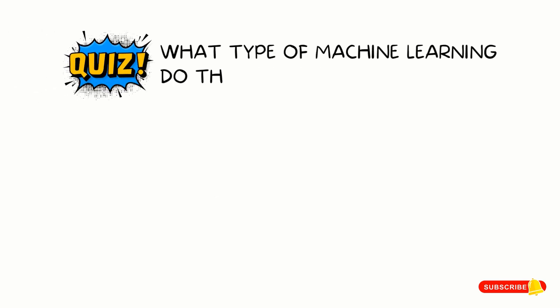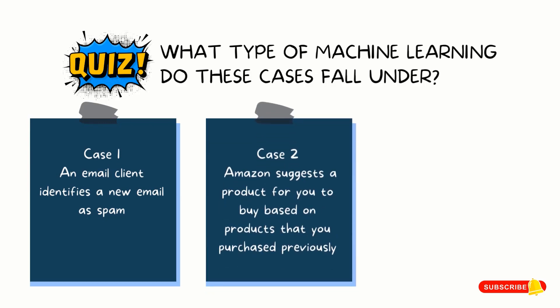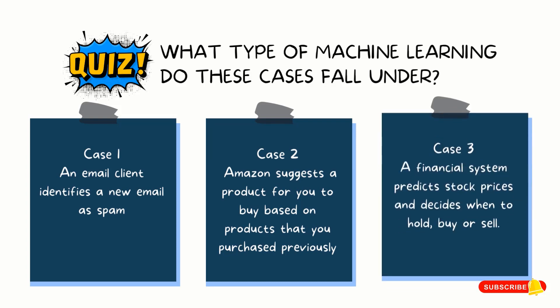To see how much we've learned, let's do a quick quiz. What type of machine learning do these cases fall under? Case 1: an email client identifies a new email as spam. Case 2: Amazon suggests a new product for you to buy based on products that you have purchased previously. Case 3: a financial system predicts stock prices and decides whether to hold, buy, or sell. Think about your answer and please comment below.